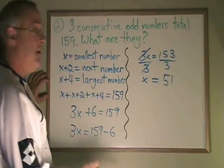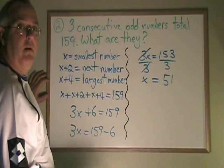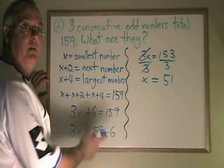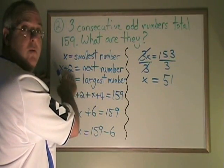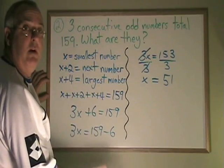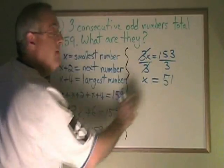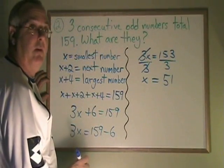x plus 2, the next number will be equal to 51 plus 2, will be equal to 53. And x plus 4, the largest number will be equal to 51 plus 4, it will be equal to 55.